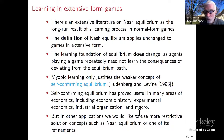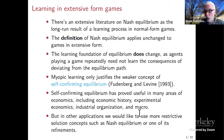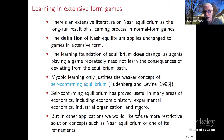You probably also know that given an extensive form game, we can associate a normal form game, and the definition of Nash equilibrium applies unchanged to games in extensive form. However, the learning foundation of equilibrium does change, because if agents are playing a game repeatedly, they needn't learn the consequences of deviating from the equilibrium path. If you always played left, you never see what your opponents would do if you played right. So if agents are purely myopic, then learning only justifies the weaker concept of self-confirming equilibrium, not Nash equilibrium, let alone refinements.